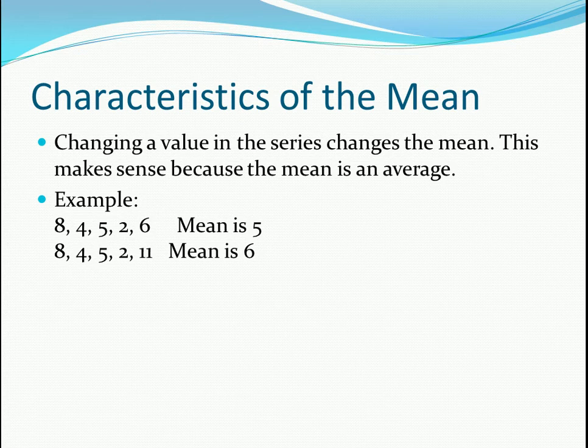Characteristics of the mean: the main one you should know is that changing a value in the series changes the mean. This makes sense because it's an average. When you have an outlier, it affects your mean a lot. In the first example, the total of those five numbers is 25, so your mean is 5. I only change one number in the second example — I change 6 to 11, which gives us 5 more total value. Now it's 30 divided by 5 and your mean is 6, just from changing one number.